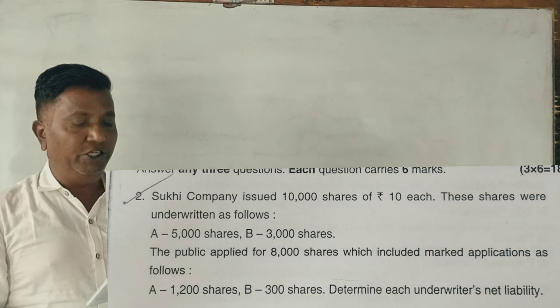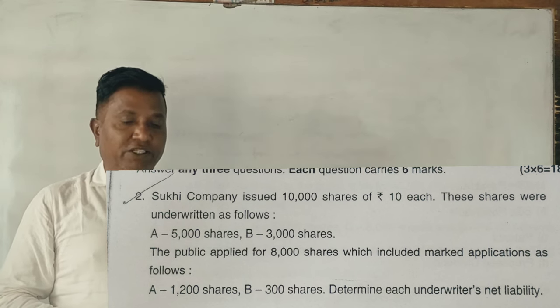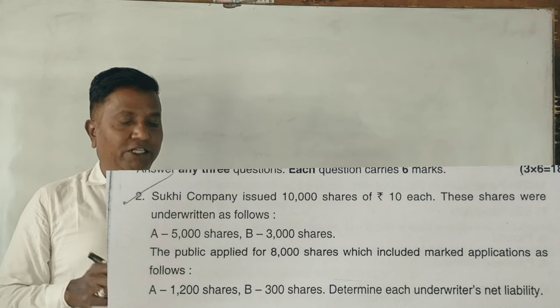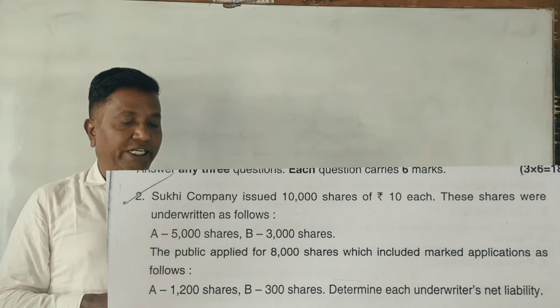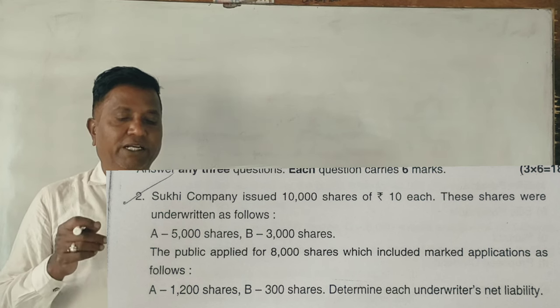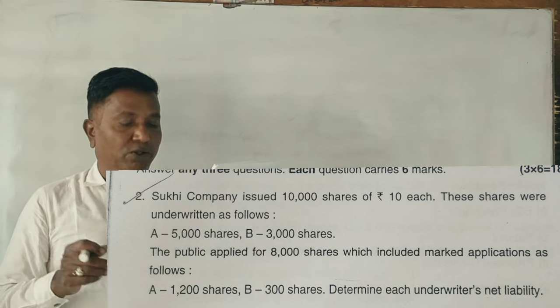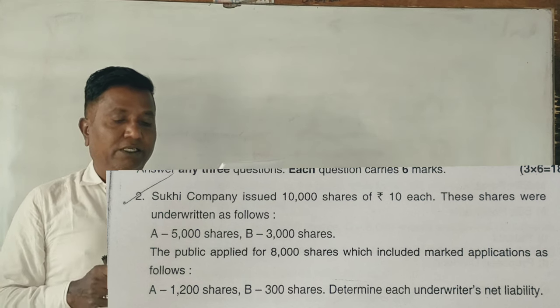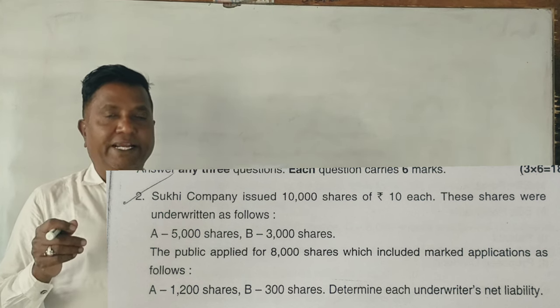Sukhi Company issued 10,000 shares of rupees 10 each. These shares were underwritten as follows: A - 5,000 shares, B - 3,000 shares. The public applied for 8,000 shares which included marked applications as follows: A - 1,200, B - 300. Determine each underwriter's net liability.